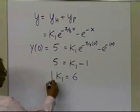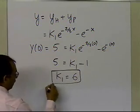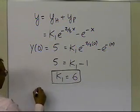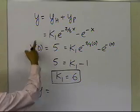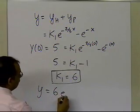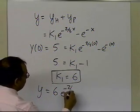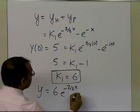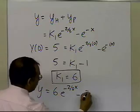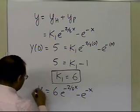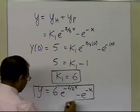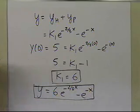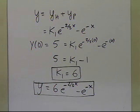Once you have found k1 equal to 6, you substitute it back into the equation and get y equals 6 times e to the power of minus two-thirds x, minus e to the power of minus x. That's the solution to your first-order ordinary differential equation.